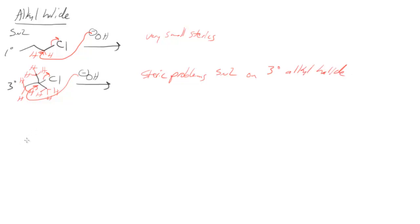What about an SN1 reaction? On SN1, the chloride leaves first in both cases, leaving carbocation behind, which then has the hydroxide add to make the final product.